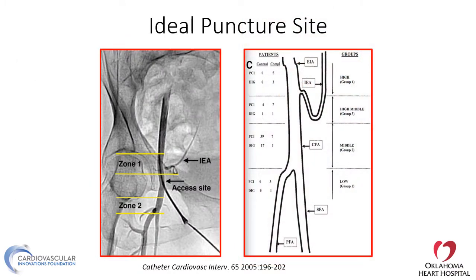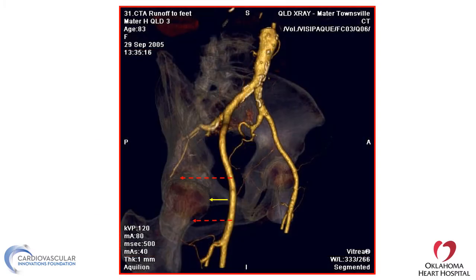The ideal puncture site is what we're going to start with. If we can puncture the femoral artery right in the middle of the head of the femur with one anterior stick, the risk of complications is going to be much less than if we puncture the femoral artery above the most inferior border of the inferior epigastric artery, or below the most inferior border of the head of the femur. This is because this area of the common femoral artery above the femoral head is closest to this bony landmark where compression can cause hemostasis.